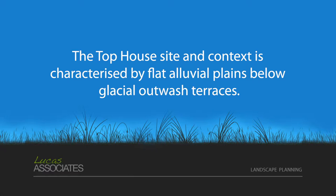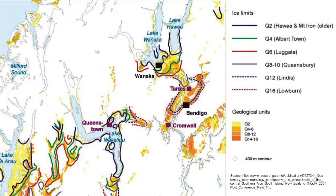When the major glaciation stepped over and came down the hallway here and then came right down to Bendigo, we've got these big glacial terraces down there and a whole earlier system. It's just good to think about the nature of the country and the context for the planning.